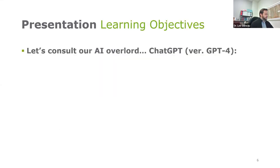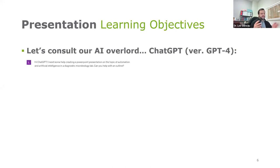For those who haven't used it, I wanted to give an example of what this type of AI could do. I thought, what better opportunity to consult AI — our AI friend, ChatGPT — to see how I might want to put a presentation together on artificial intelligence and automation applications in the Microlab. This is actually a screenshot taken from ChatGPT, and I asked: "Hi ChatGPT, I need some help creating a PowerPoint presentation on the topic of automation and artificial intelligence in a diagnostic microbiology lab. Can you help with an outline?"